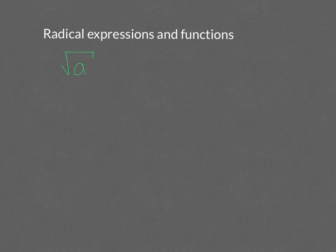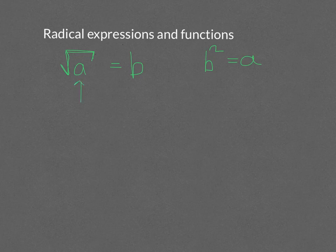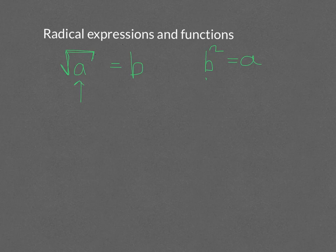This video is going to introduce radical expressions and functions. The square root symbol means there is a value of B where if it were squared it would equal A. Your A has to be positive, meaning inside the square root you have to have a positive number. Whether it's 2 squared giving 4 or negative 2 times negative 2 also giving positive 4, the only kind of number you can get inside your square root is a positive number.